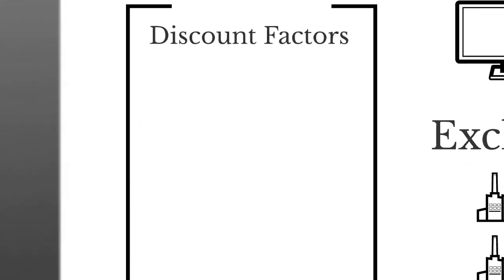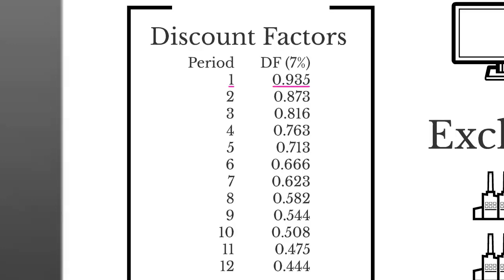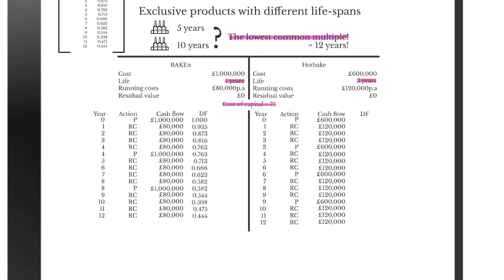Looking at the discount factors, we have periods from one to twelve and the corresponding discount factors at 7% for each. In year one, a discount factor of 0.935 is applied; in period two, 0.873 is applied, and so on. We install those numbers into our calculation right down to the twelfth period, which has a discount factor of 0.444.